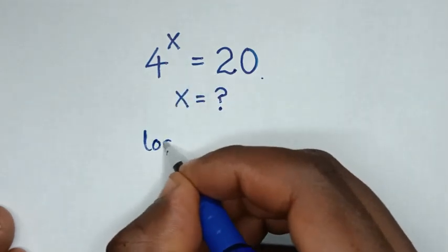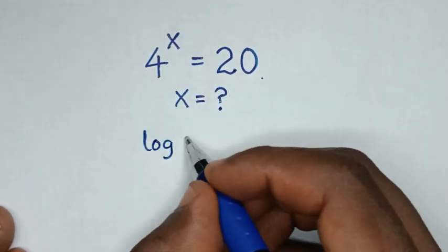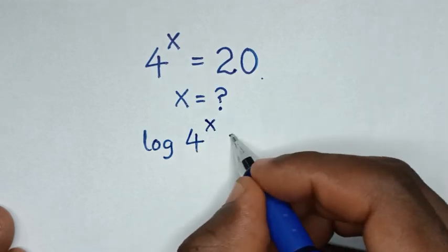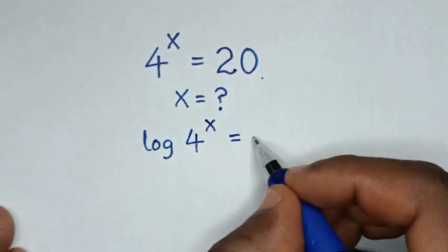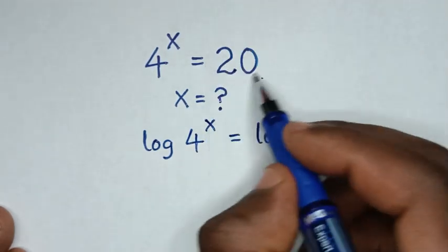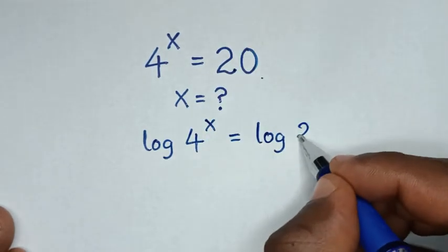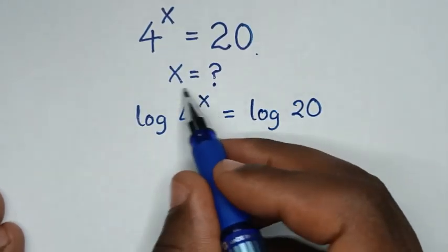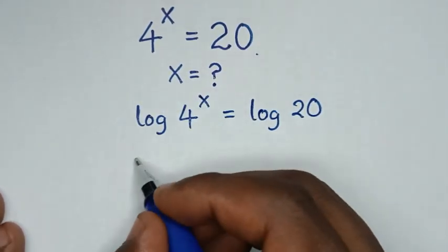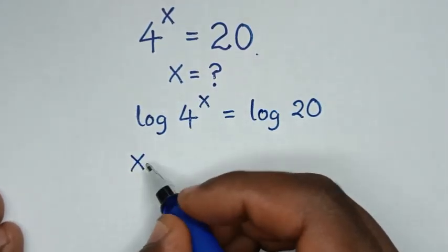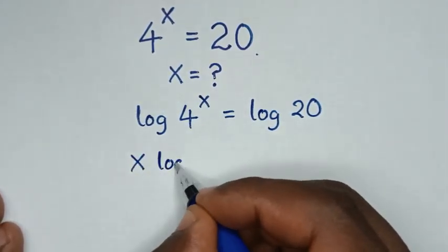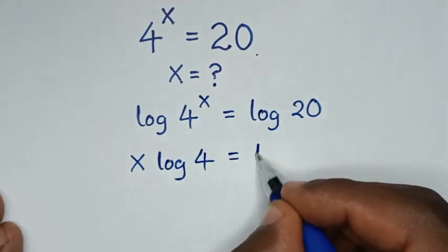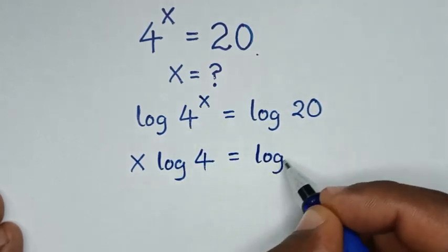So it will be log of 4 to the power x is equal to log of 20. Then this power of x will move to the base, so it will be x times log of 4 is equal to log of 20.